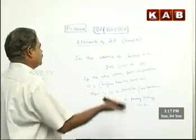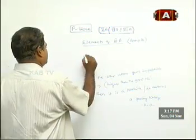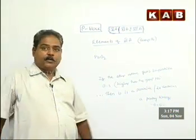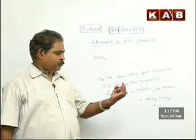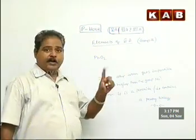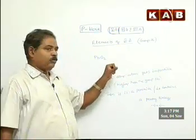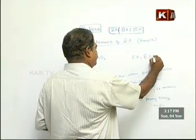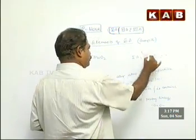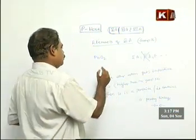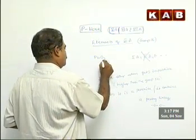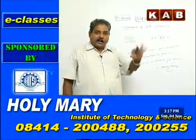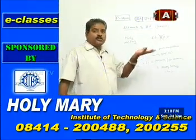Let us look at some examples. PbO2 — is it a peroxide, a superoxide, or an oxide? Do you have a fixed element: group 1A elements like lithium, sodium, potassium? No. Group 2A: beryllium, magnesium, calcium? No. Do you have fluorine? No. So in the absence of 1A, 2A, and fluorine, give minus 2 to oxygen: minus 4 total. Lead becomes plus 4 because the total should be 0. For lead, plus 4 is not an impossible oxidation state.